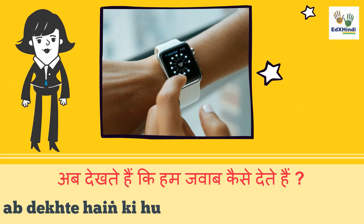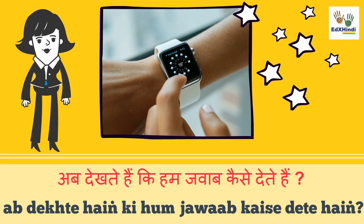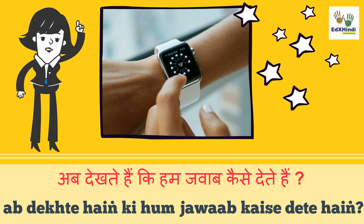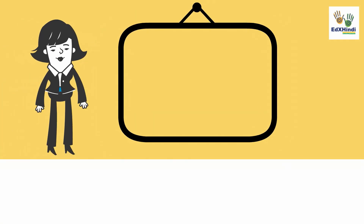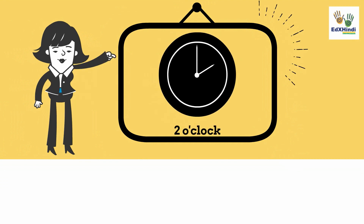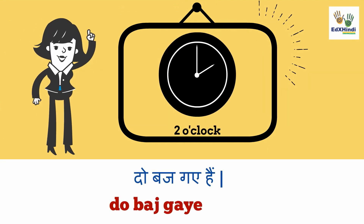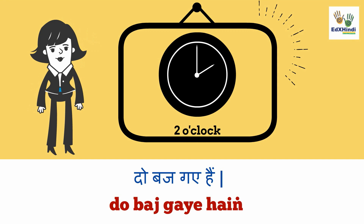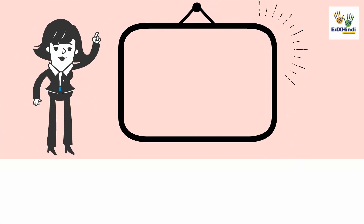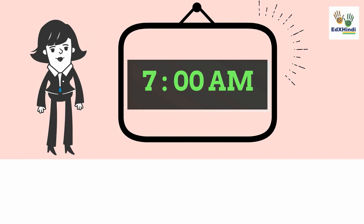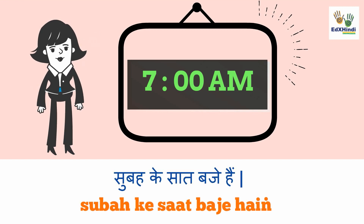Ab dekhte hai ki hum jawaab kaise dete hai. Now let's see how to answer time-related questions. If I have to say it's two o'clock, I will say: do bajgay hai. If I have to say it's seven a.m., I will say: subah ke saat bajay hai.